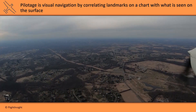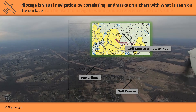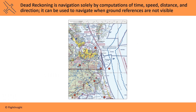The most basic form of navigation is pilotage, which involves visually correlating landmarks on a chart with what's seen on the surface. Here you can see power lines on a golf course listed on a chart and seen from the cockpit. Dead Reckoning is navigated solely by computations of time, speed, distance, and direction. It can be used to navigate when ground references aren't visible.